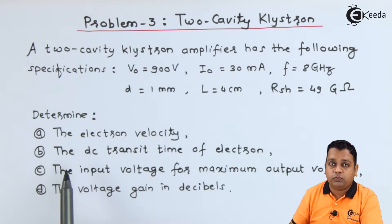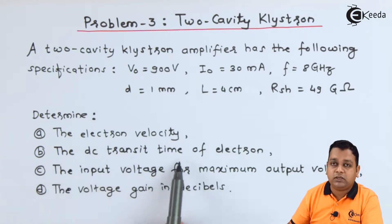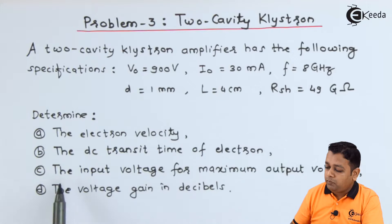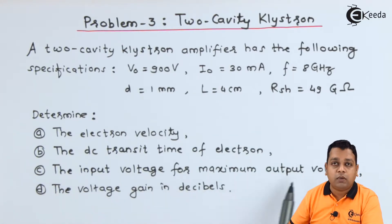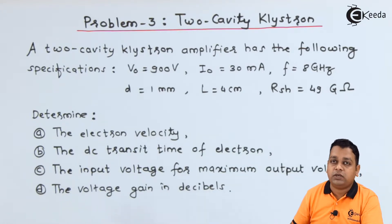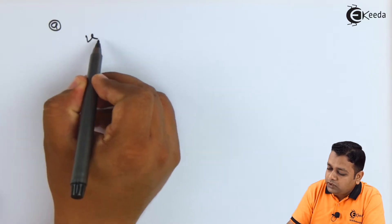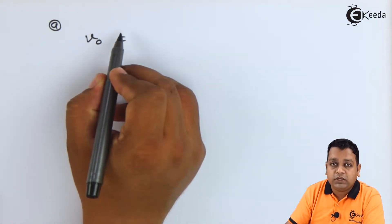In part A, we are asked to find the electron velocity. In part B, the DC transit time of the electron. In part C, the input voltage for maximum output voltage. And finally, the voltage gain in decibels is to be determined. So we proceed for part A, where we are asked to determine the value of electron velocity, denoted by v suffix 0.